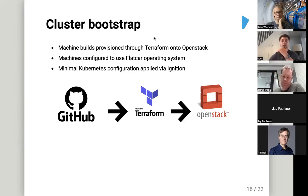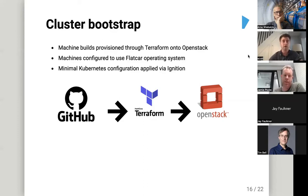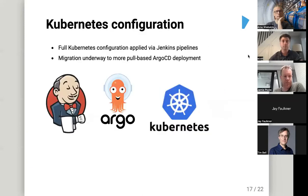I'll cover how we use these Ironic servers within Kubernetes and what we use them for. We have a process for cluster bootstrap where we build a minimal Kubernetes cluster. We have Terraform configuration in GitHub which instructs OpenStack to create a collection of bare metal Ironic machines. They are brought online with a minimal Kubernetes configuration applied via Ignition — we use the Flatcar operating system and that's its bootstrapping method.